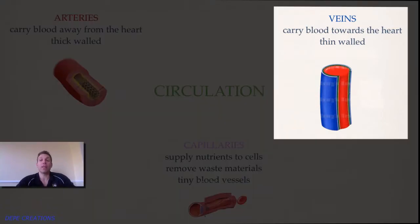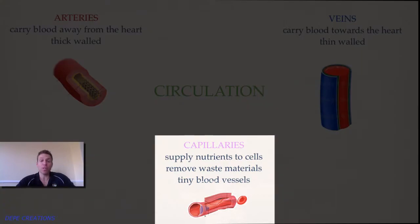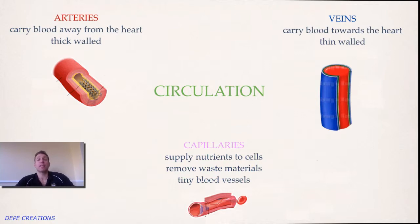Veins have a thinner wall because they carry blood towards the heart, and the blood is under less pressure coming from the muscles back up to the heart. Then we have the capillaries, which have the thinnest wall because waste materials and nutrients pass across the membrane — and they are the tiniest blood vessels in the body.